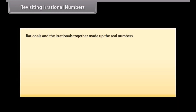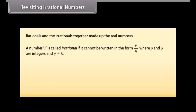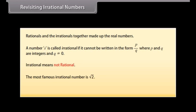Revisiting irrational numbers. We know that rationals and irrationals together make up the real numbers. A number s is called irrational if it cannot be written in the form p/q where p and q are integers and q is not equal to zero. Irrational means not rational. The most famous irrational number is √2. Other examples are π, which equals 3.141592..., and 0.10110111011110... and so on.